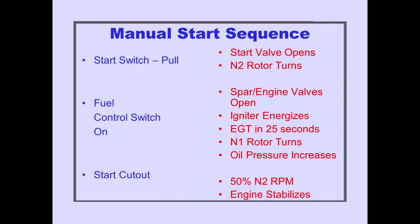This summarizes the manual start sequence. Pulling the start switch out opens the start valve. The N2 rotor begins turning. When N2 RPM increases past the fuel on command indicator, positioning the fuel control switch to run opens the spar and engine valves and energizes the igniter. EGT increases within 25 seconds. The N1 rotor begins turning and oil pressure increases. Starter cutout occurs automatically at 50% N2 RPM and the engine stabilizes at idle.